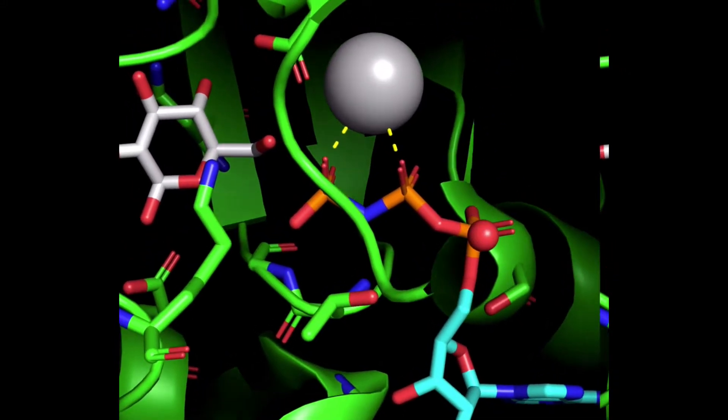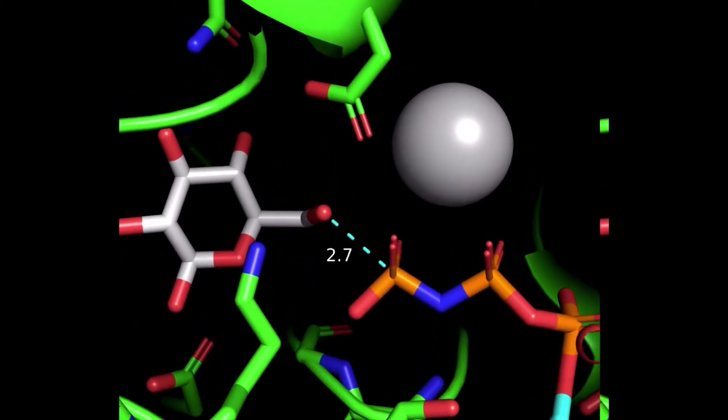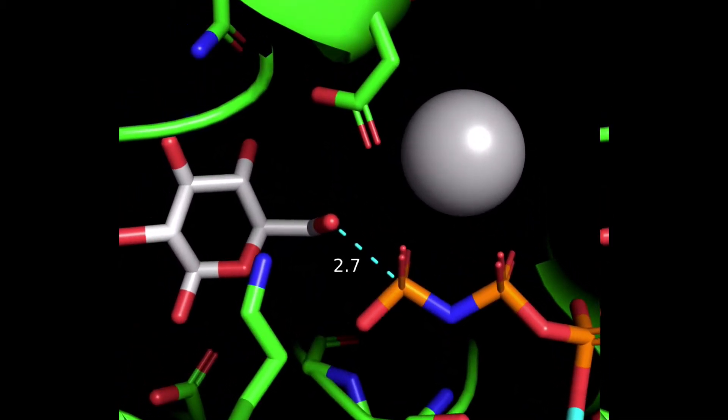Look how close glucose's oxygen atom is to the phosphate. It's positioned perfectly to react, if this were ATP. So neat.